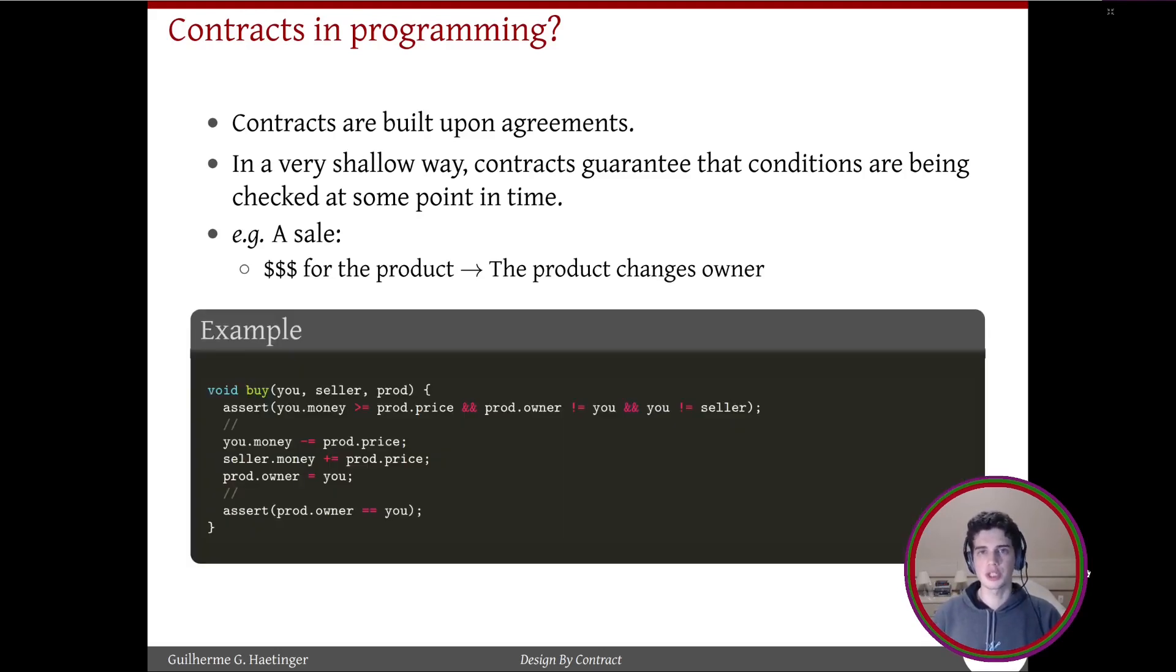In terms of code, this would just be two assertions. The first one guarantees that you have the money and that you're not the owner already, and the second one guarantees that you are the owner.